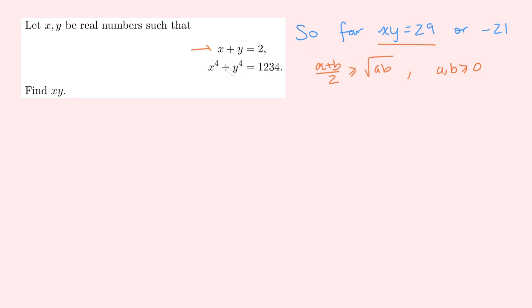So neither of those are true. So therefore, they both must be positive. Which means we can apply the arithmetic mean, geometric mean inequality. And this says that a plus b over 2, or x plus y over 2, which would be 2 over 2, which is just 1, would be bigger than or equal to the square root of their product, which is 29. And that's obviously not true.